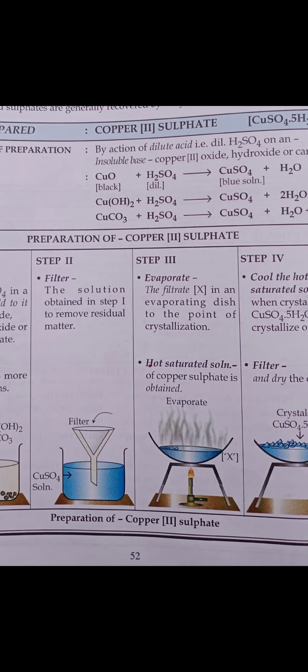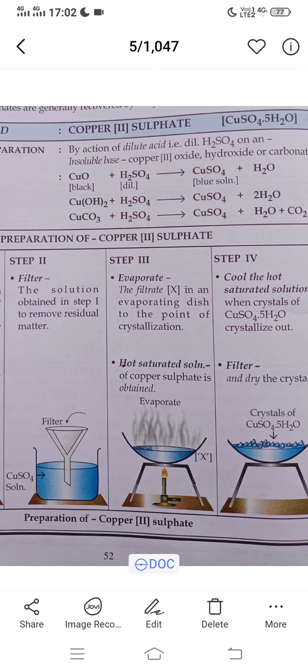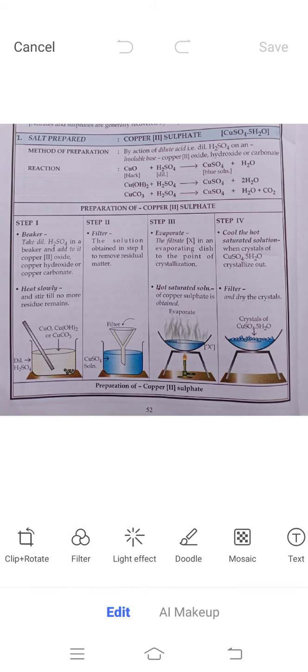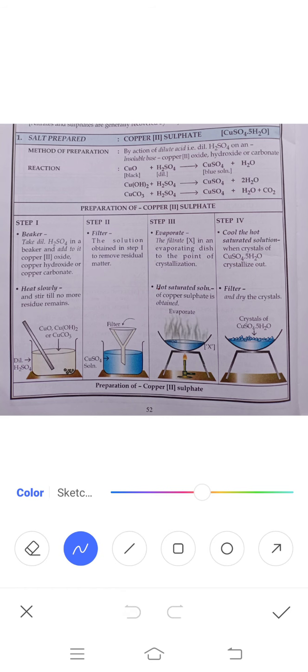Copper sulfate has the formula CuSO4.5H2O. The method of preparation given here is by the action of dilute acid. What type of acid will we use? We will use dilute H2SO4. Why H2SO4? Because in the product, copper sulfate, you can see the SO4 part. Where do we get this SO4 from? We get it from H2SO4.